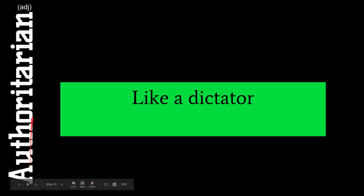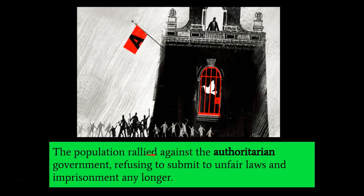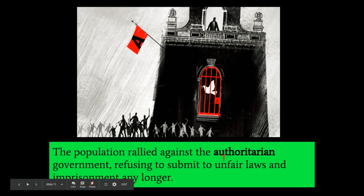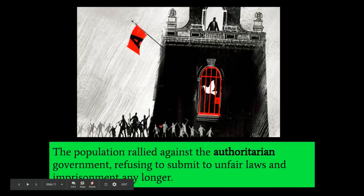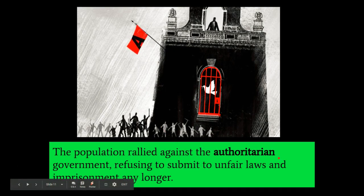For our next word we have authoritarian, which is an adjective that suggests something is like a dictator. The population rallied against the authoritarian government, refusing to submit to unfair laws and imprisonment any longer. You'll note that authoritarian is usually used in reference to a government or a leader. Sometimes it's used in a silly way — to talk about a parent or a teacher — comparing them to an authoritarian leader. Know that it means like a dictator and tends to relate to a government that is restrictive.